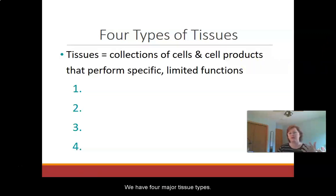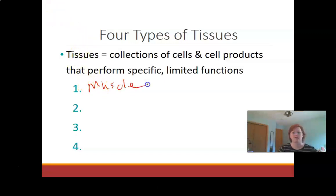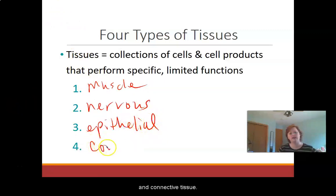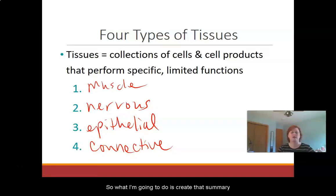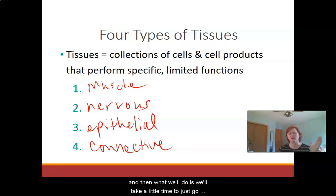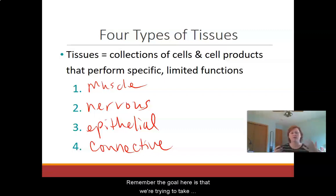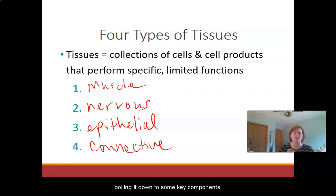We have four major tissue types: muscle, nervous, epithelial, and connective tissue. What I'm going to do is create that summary for each tissue type, and then we'll go through the slides quickly to see if we missed any key points. Remember, the goal here is that we're trying to take something really big and broad and boil it down to some key components.